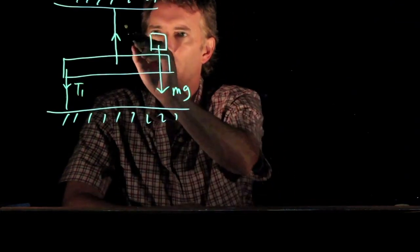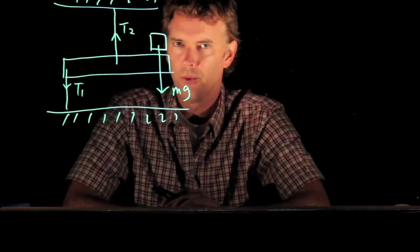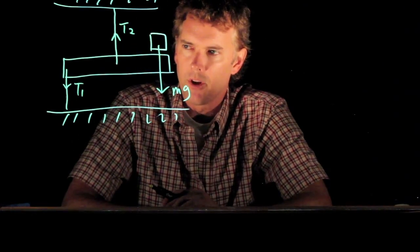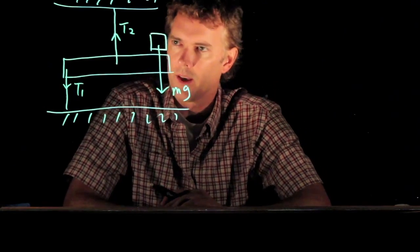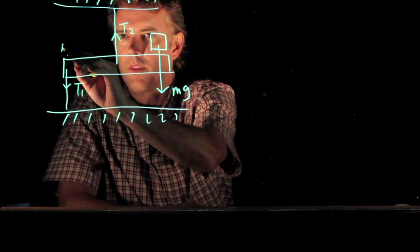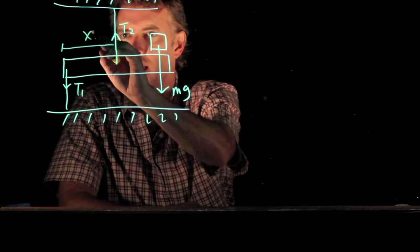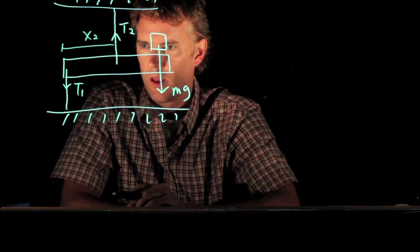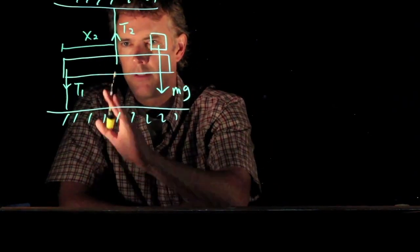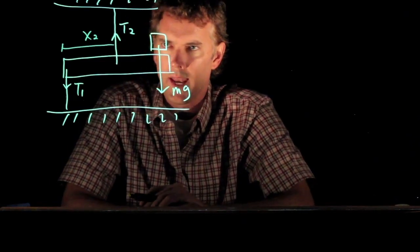So let's label a few of these things. Let's say this is tension 1 and this is tension 2. And let's give them some positions. Okay, so this position right here we will call x2. The position of this one is all the way at the left of the beam. We'll call that x equals zero.